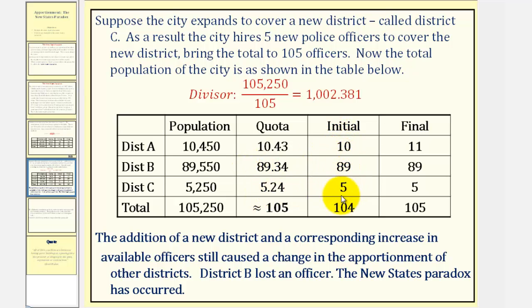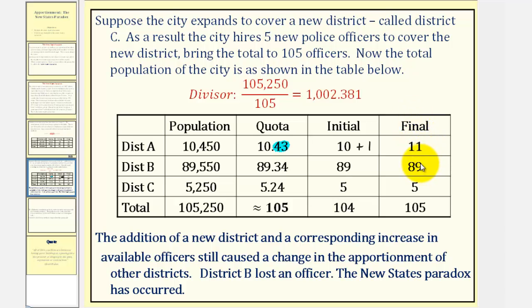Notice this gives a total of 104 officers. Because we have 105 officers to apportion, we give the extra officer to the district with the largest decimal value of its quota. Comparing 0.43, 0.34, and 0.24, district A has the largest decimal value, so district A receives the extra officer. The final apportionment is 11, 89, and 5, bringing the total to 105.